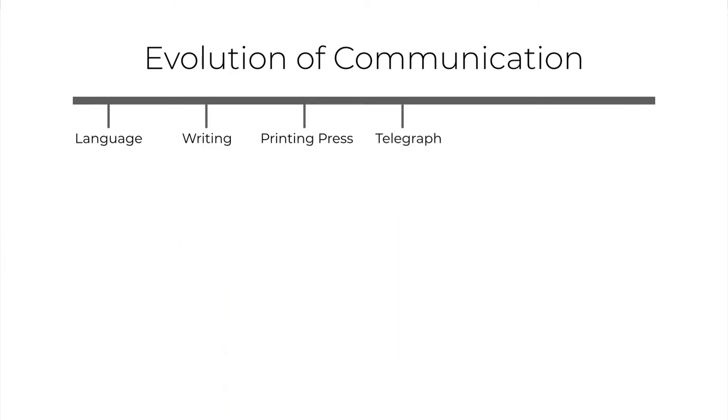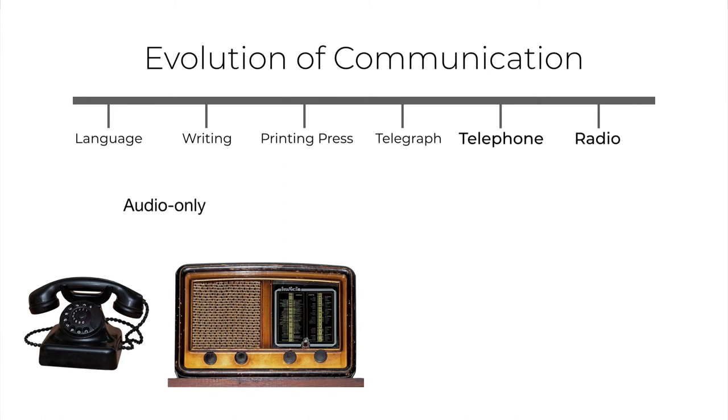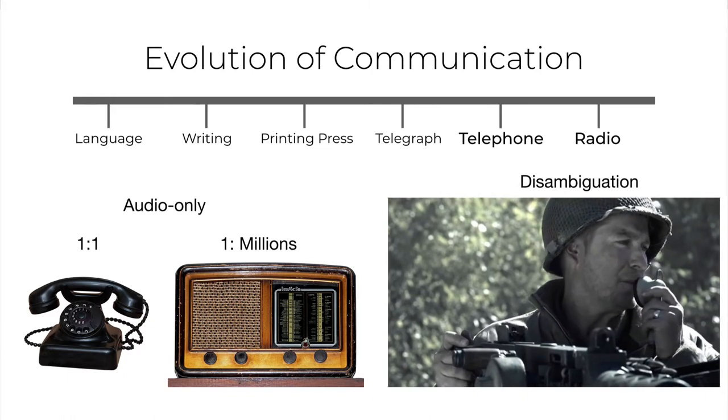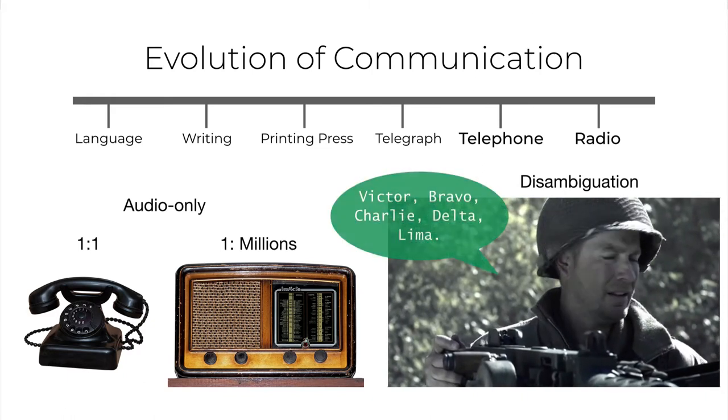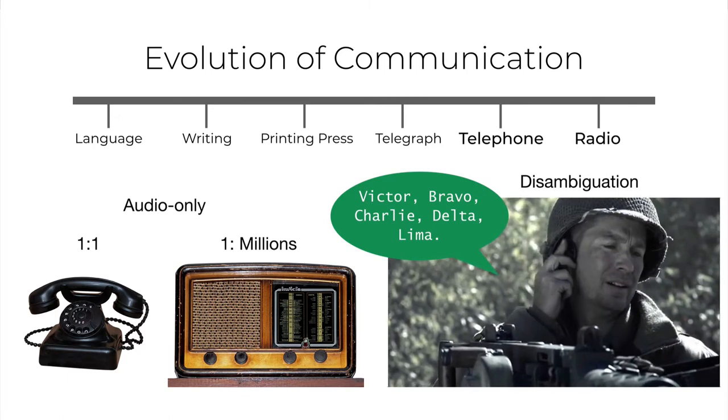Invention of radio and telephone are other important milestones in the evolution of communication. They both are audio only, and telephone is one-to-one while radio can be broadcast one to millions. In audio transmission, to ensure disambiguation—that is, no confusion—you would have seen in war films they use words like Victor Bravo to convey the letters V and B without any confusion, or the words Charlie Delta Lima to convey C, D, and L. This is another example of adding more to the information that needs to be communicated, which makes it slightly inefficient but ensures accuracy.